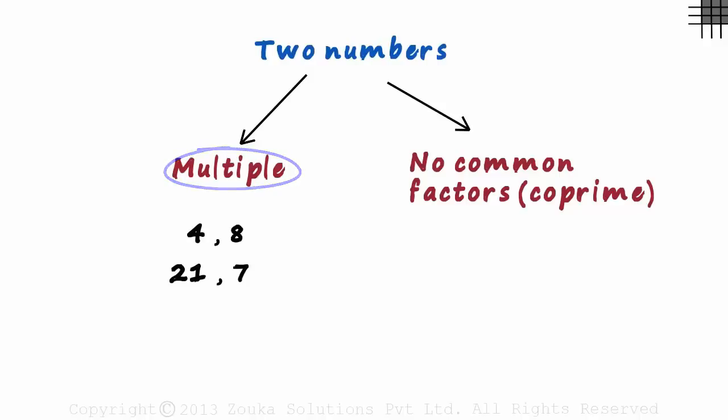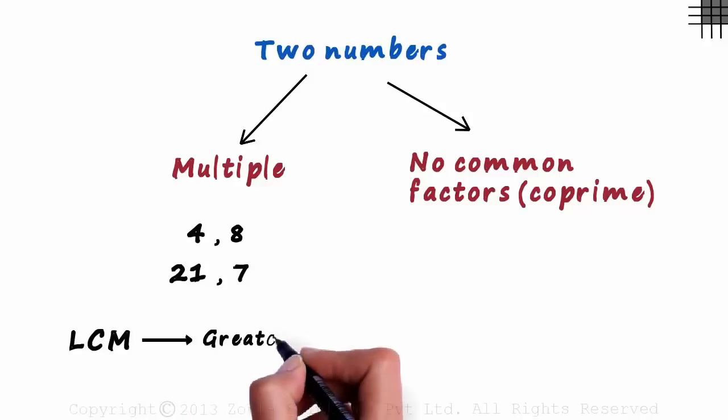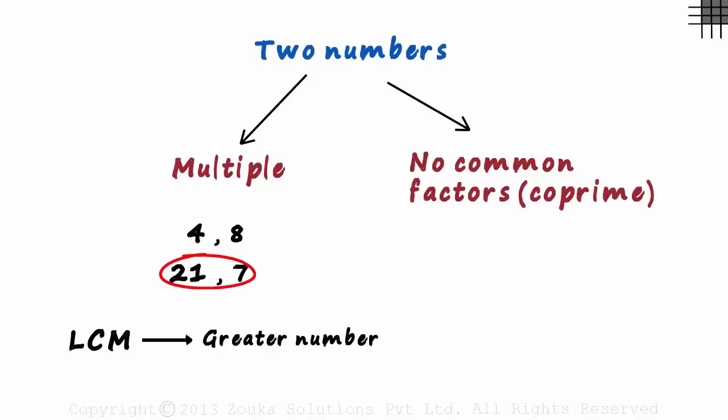Why is it a special case? It's because in such cases, the LCM is always the greater number. The LCM of 4 and 8 will be 8, and the LCM of 21 and 7 will be 21.